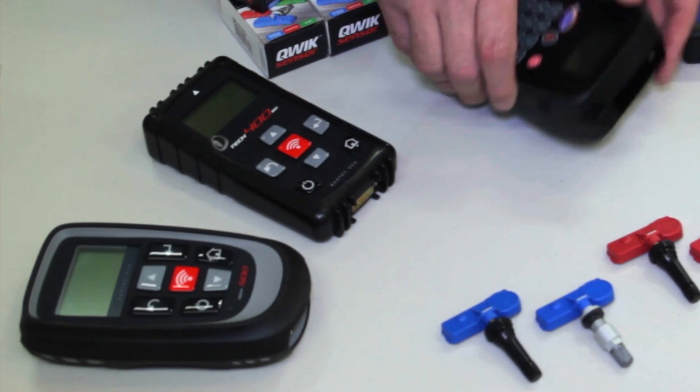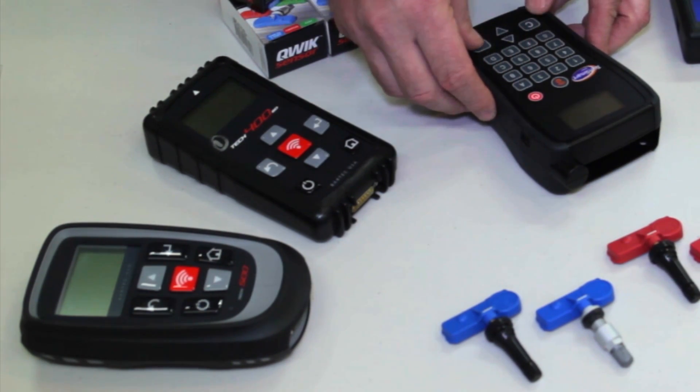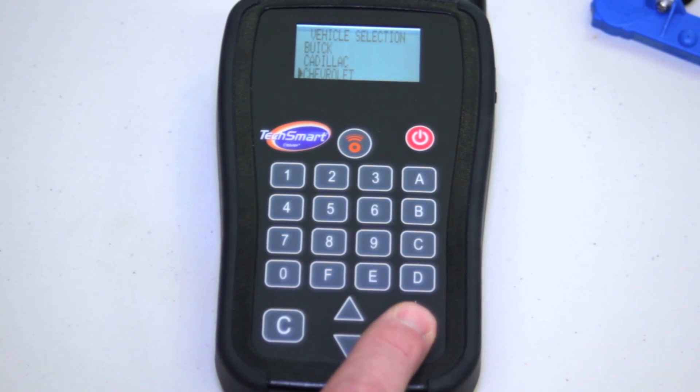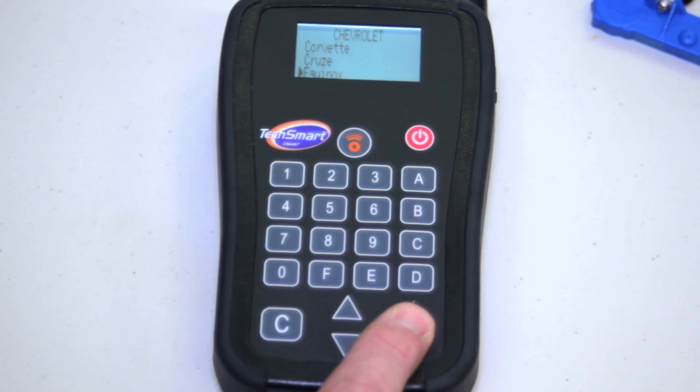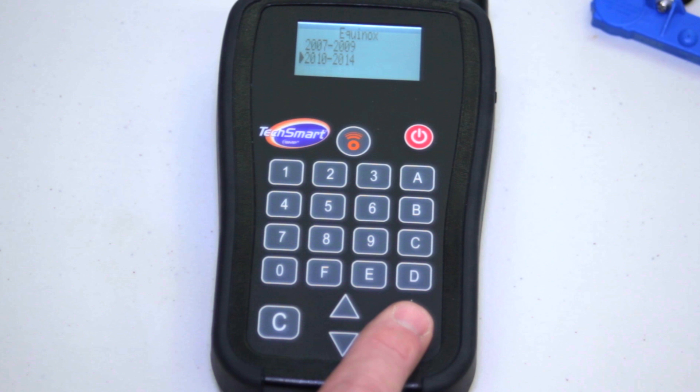I'm going to grab a random tool. I'm going to select the vehicle, select Chevrolet, select Equinox, and pick model year between 2010 and 2014.